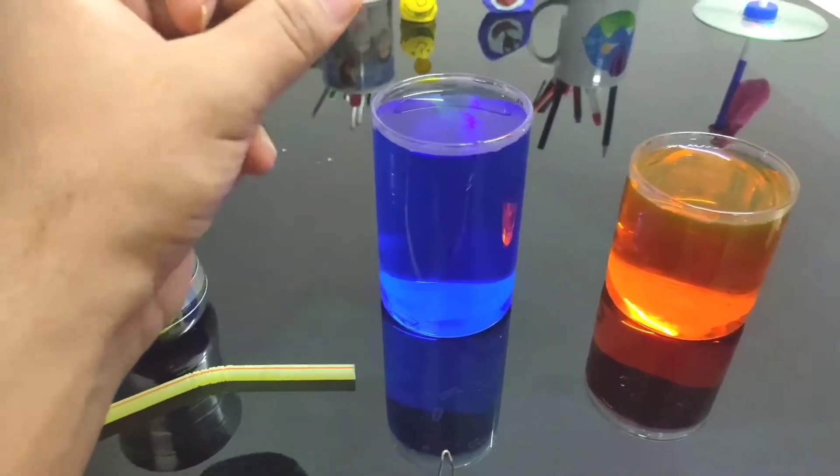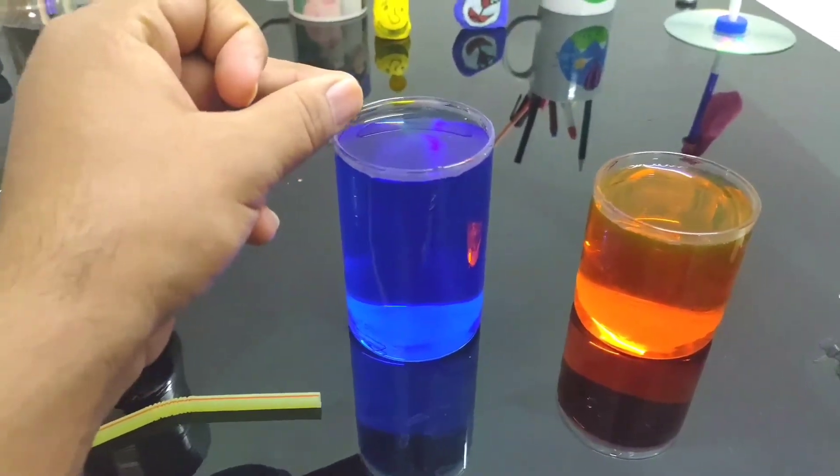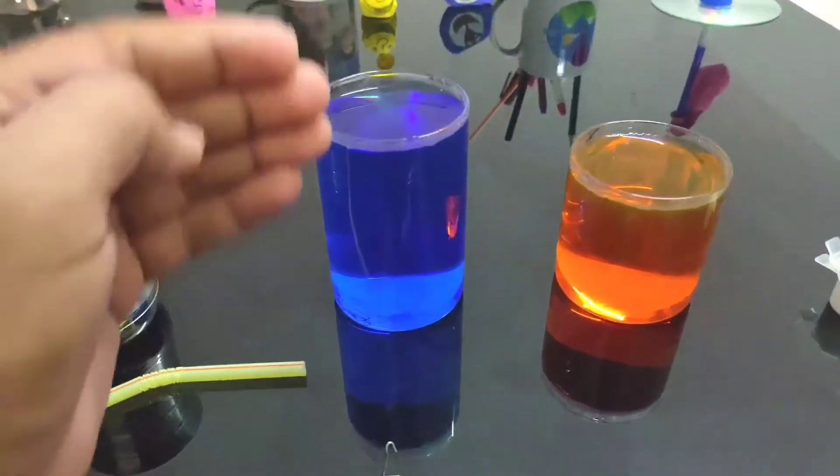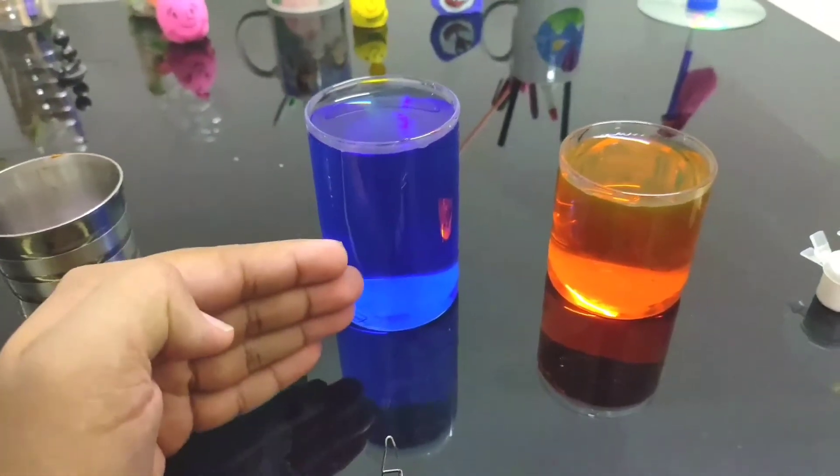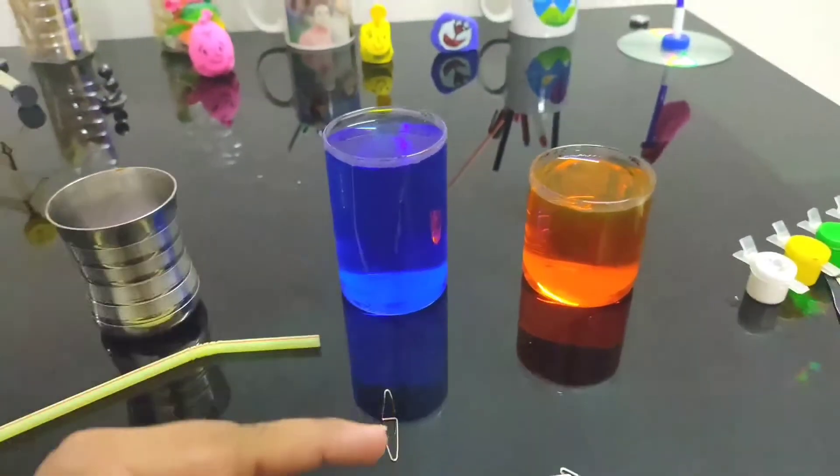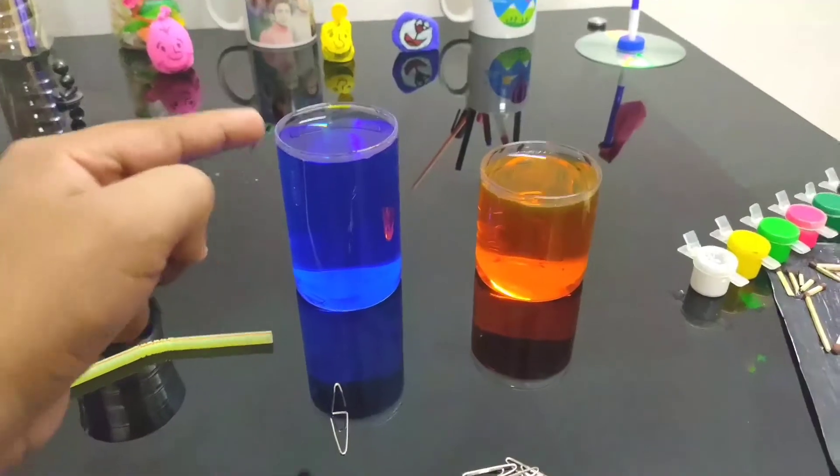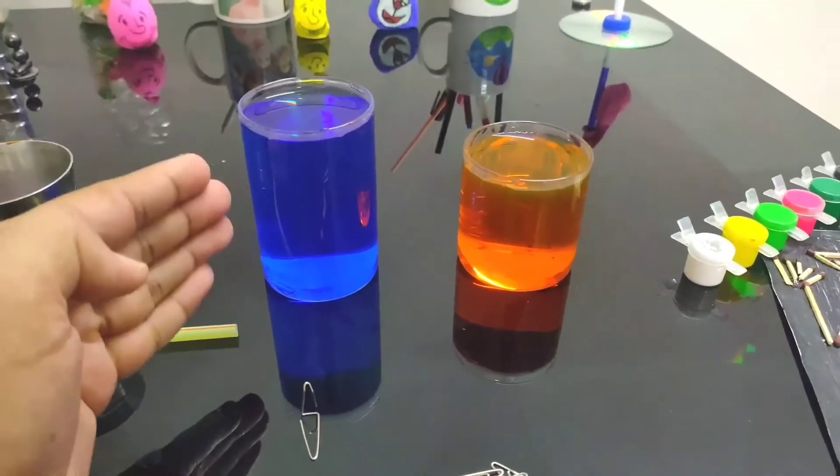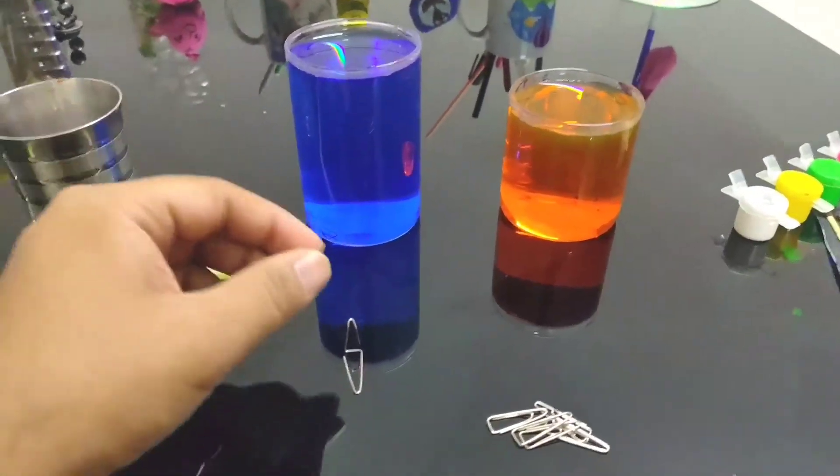As soon as I place the paper clip to float, it sinks because of high density. But in today's session we will see how we can float this paper clip on the water's surface. For this, you will have to create a mechanism with the paper clip.